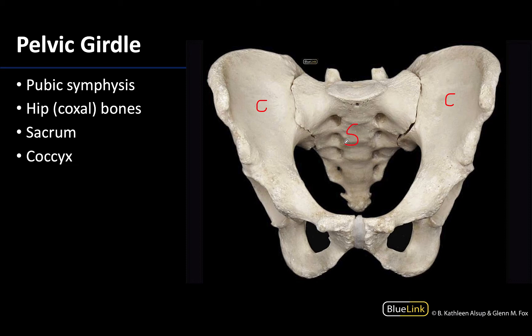The sacrum is pretty distinguishable because of the very obvious sacral foramina that you can see on either side. You can also see a bit of the coccyx, which is always pretty variable in terms of what it looks like, but generally you have a larger portion that tapers down to a smaller portion. The coccyx is important for muscle and ligament attachment associated with the pelvic cavity as well as the pelvic diaphragm.